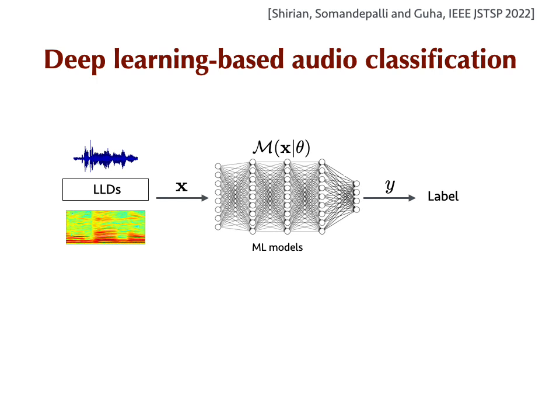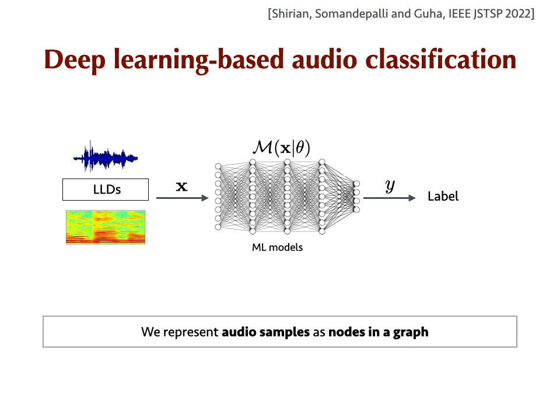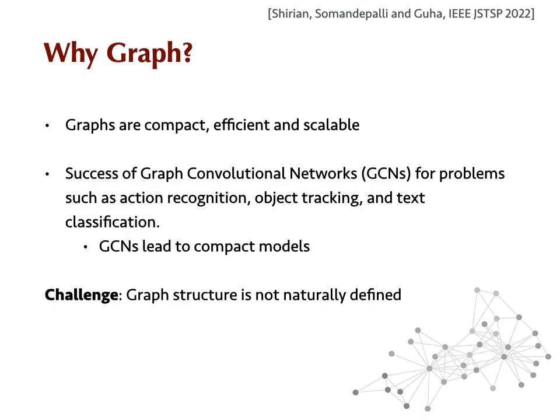In contrast to these existing approaches, what we do is we treat audio samples as nodes in a graph. Graphs are known to provide a compact, efficient, and scalable way of representing data. Recent works have successfully used graphs to represent data that do not necessarily appear as graphs, taking advantage of graph neural networks which lead to compact models. Of course, the critical point here is how to construct graphs so that we can get good results, because graphs are not naturally known in cases like audio classification.